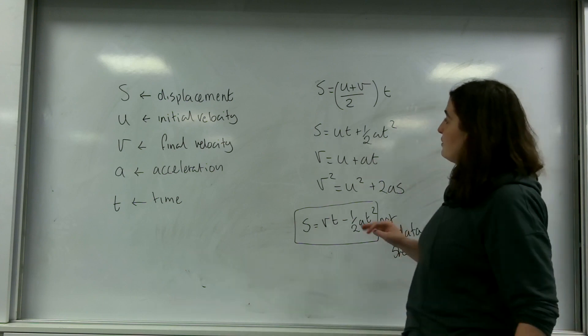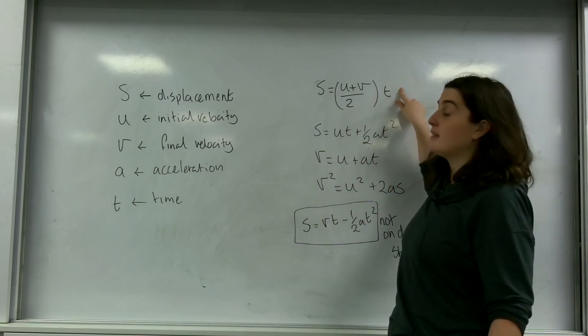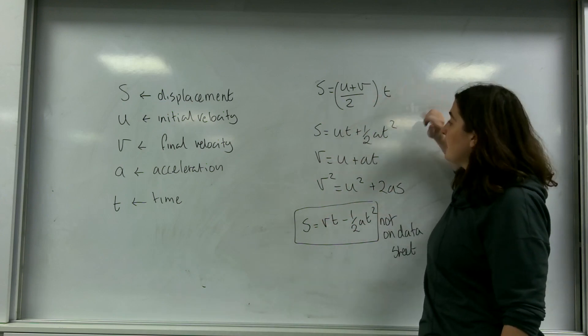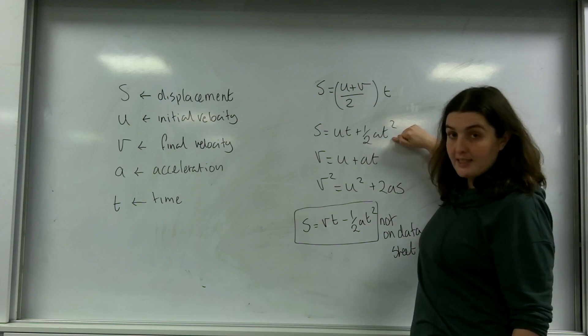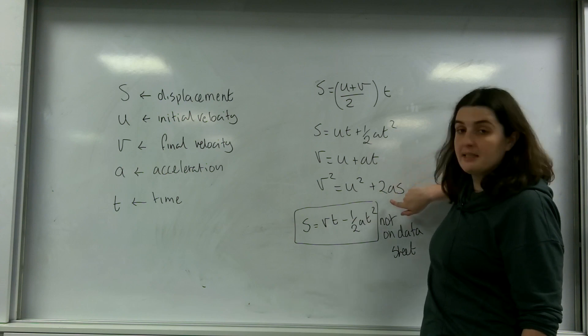It's really important to notice that most of these have something missing. For example, this one is missing A for acceleration. This one is missing the initial velocity. This one is missing displacement, and this one is missing time.